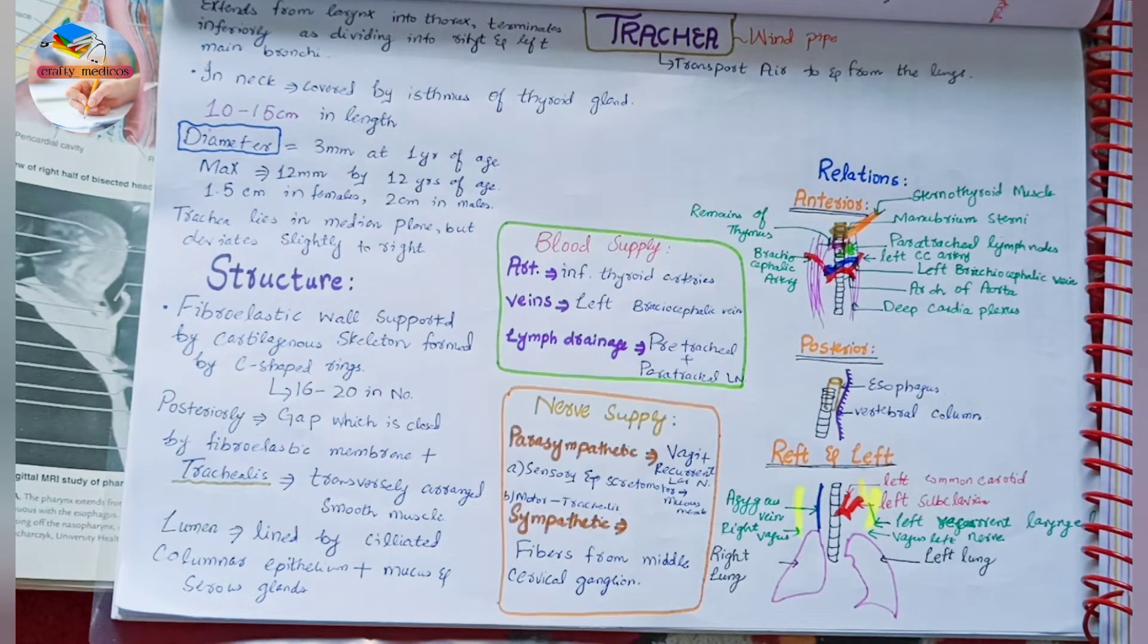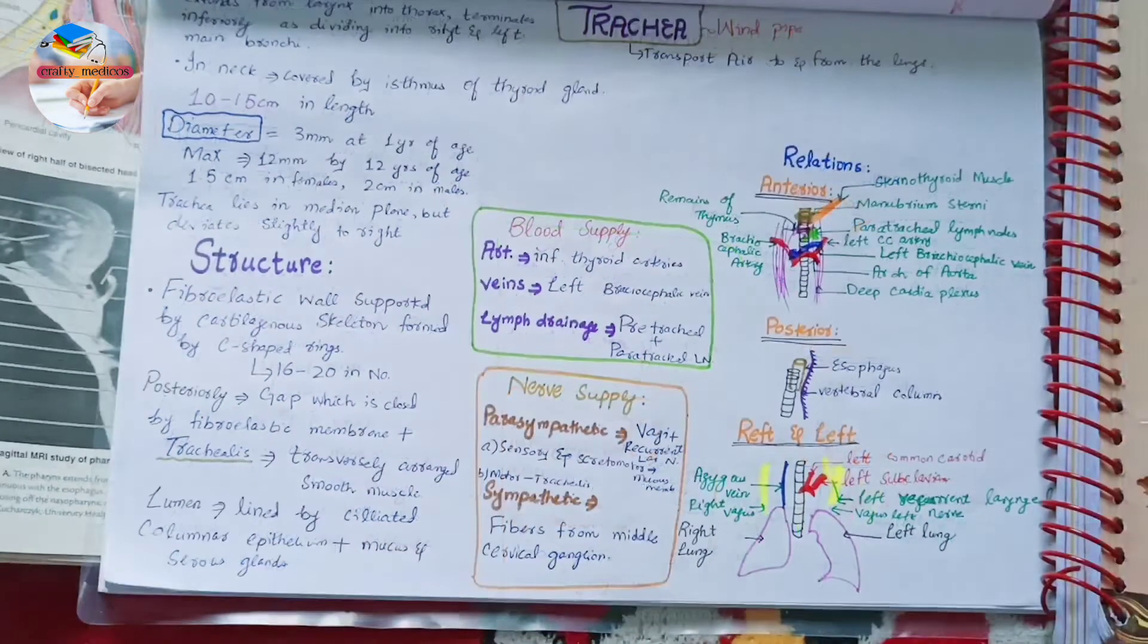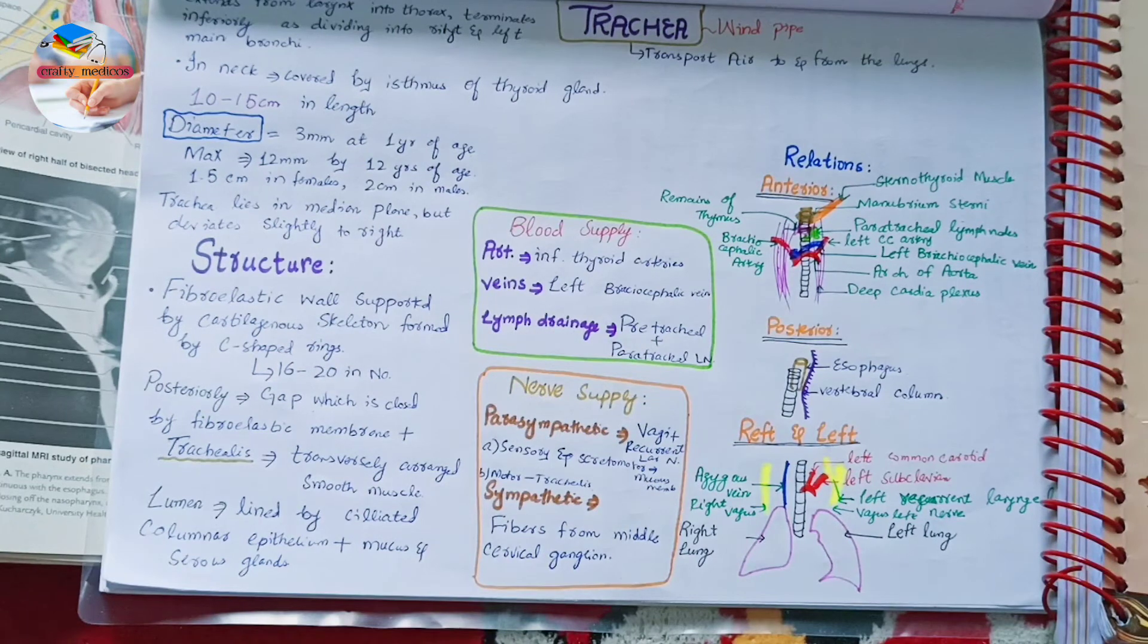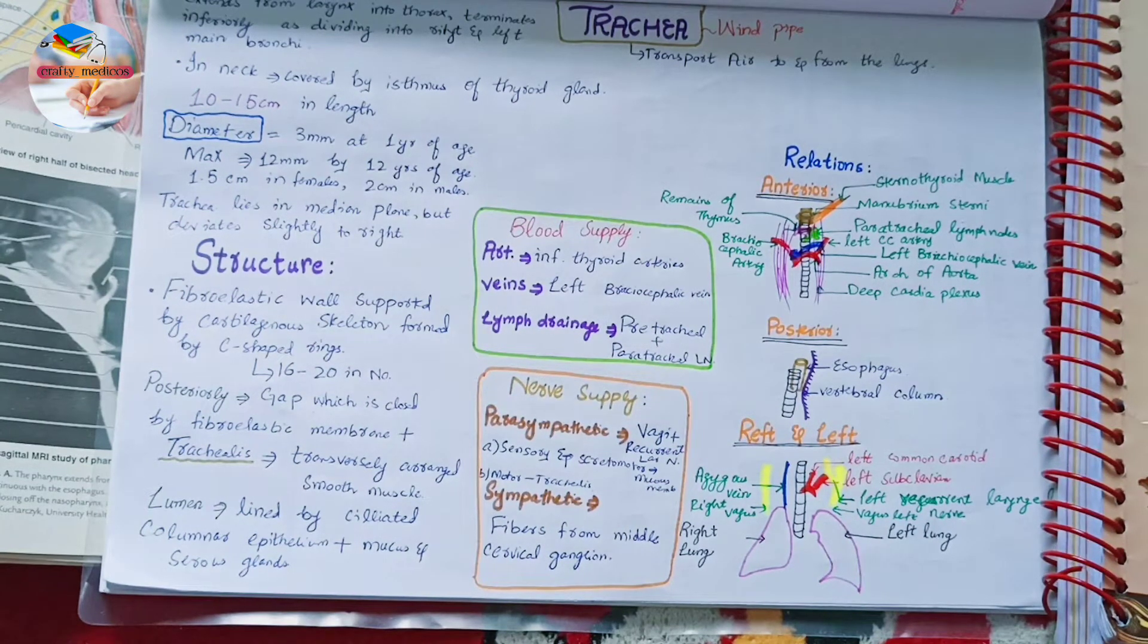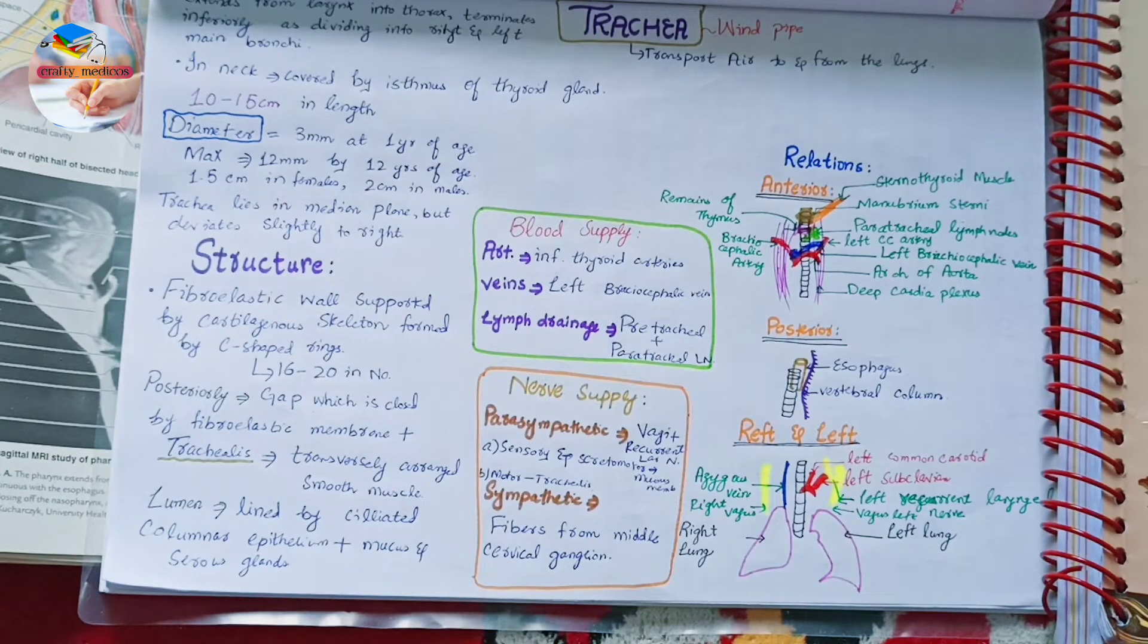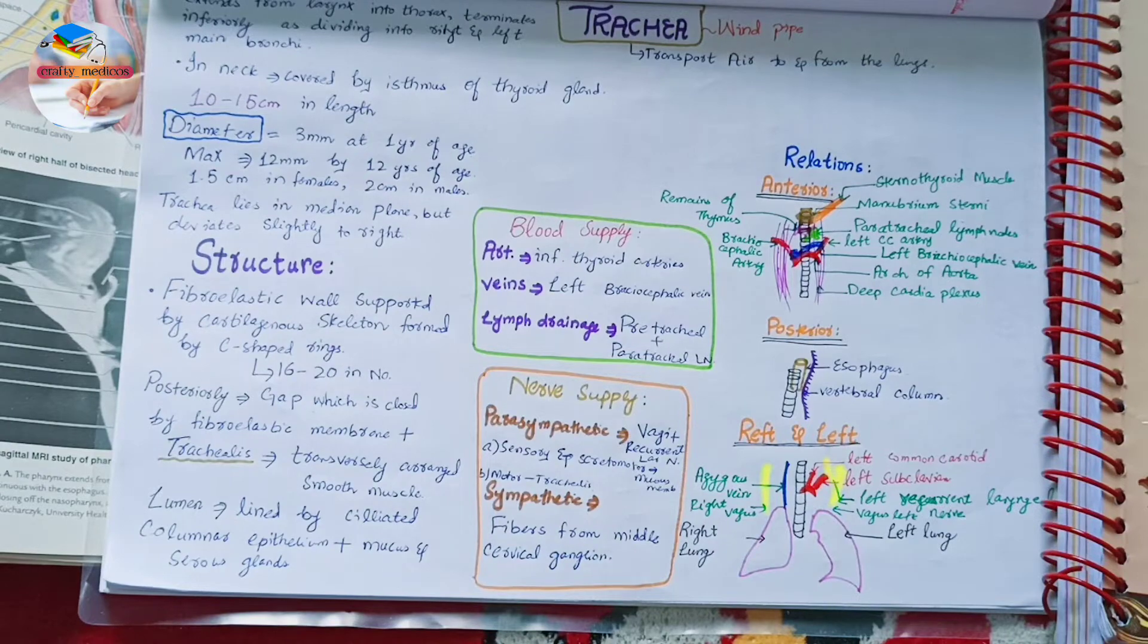The end of the trachea lies at the lower border of the cricoid cartilage opposite the sixth cervical vertebra. In cadaver its lower bifurcated end lies at the lower end of the fourth thoracic vertebra, whereas in the living subject in the erect posture the bifurcation lies at the lower border of the sixth thoracic vertebra and descends still further during inspiration.